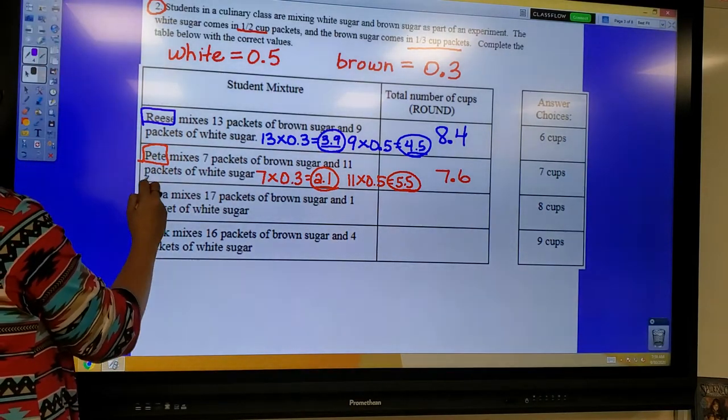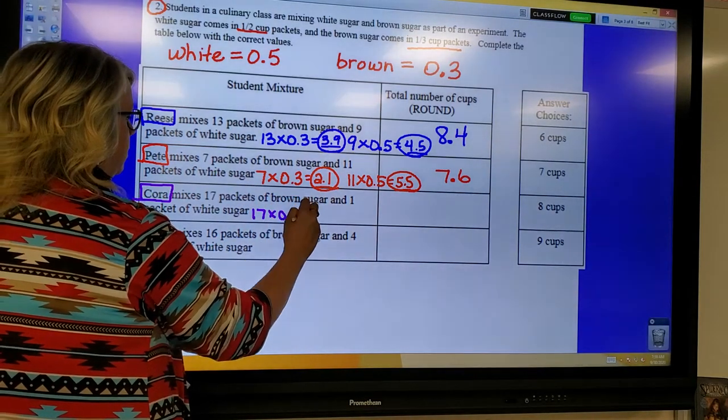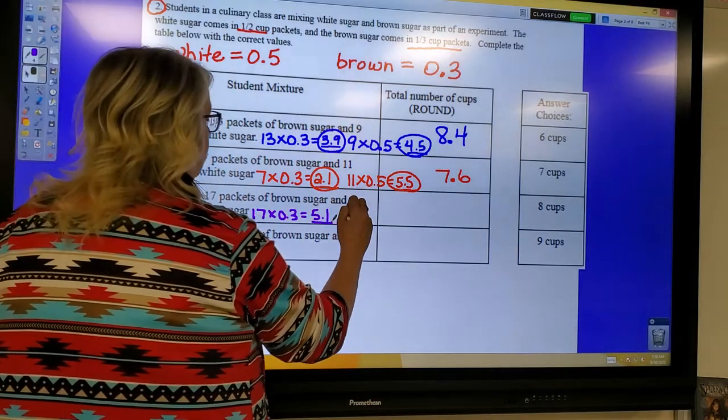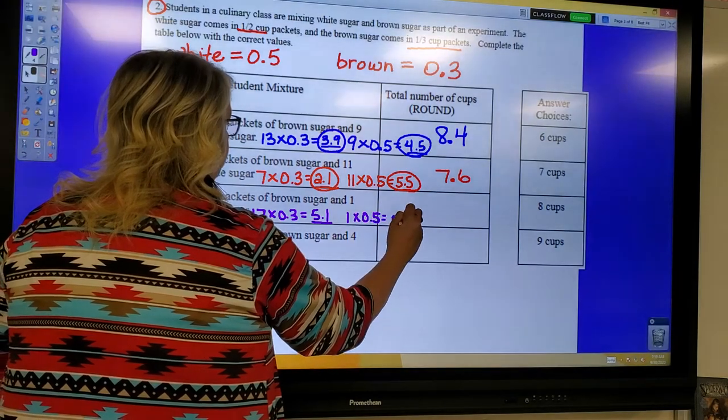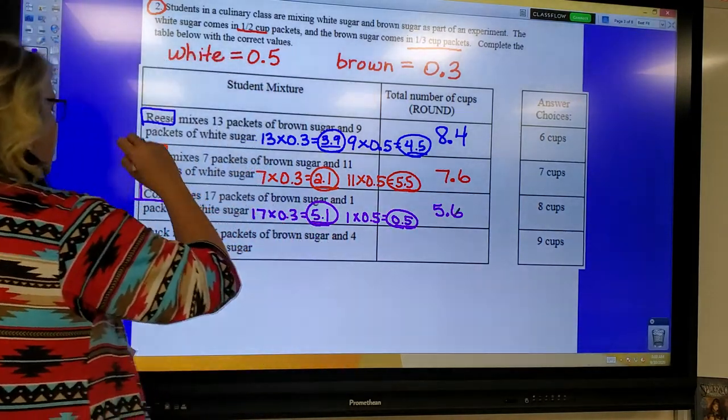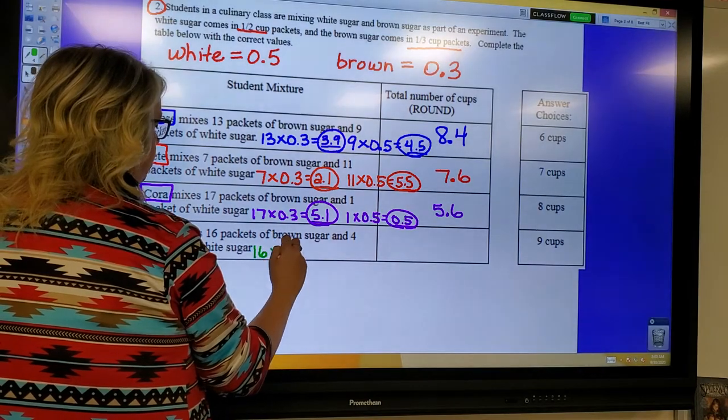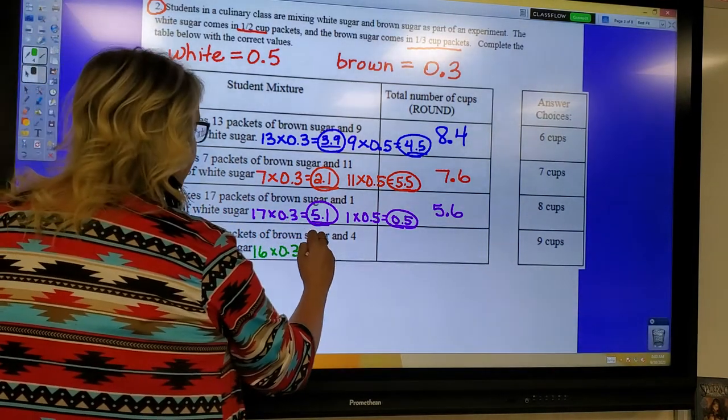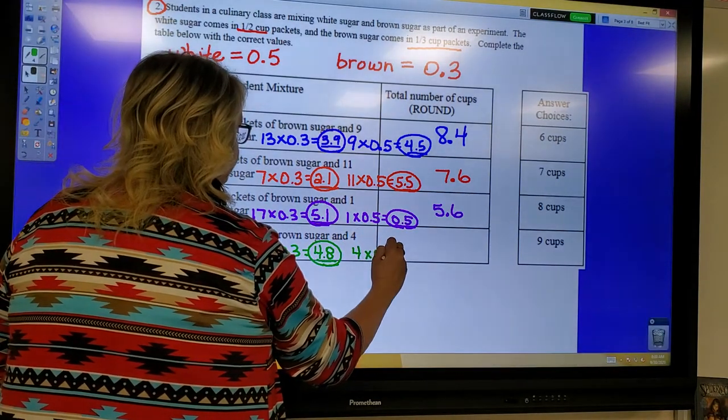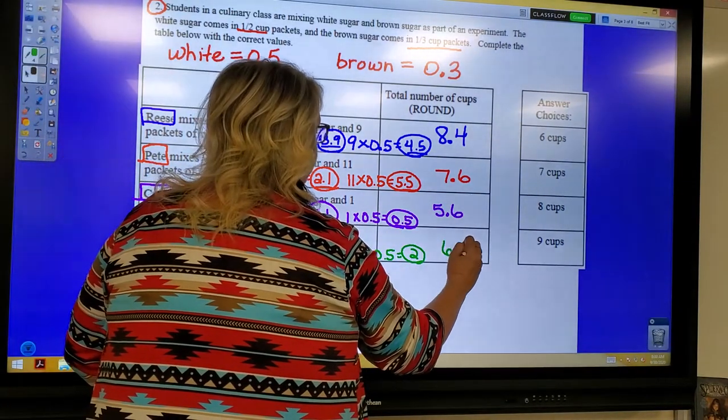Okay, let's move on to Cora. I'm going to do Cora in purple. Cora is going to use 17 packets of brown. So 17 brown is 0.3, and 17 times 0.3 is 5.1, and 1 packet of white. 1 times 0.5 is 0.5. So 5.1 plus 0.5 is 5.6. And lastly, Huck. We'll do Huck in green. Huck has 16 packets of brown. So 16 times 0.3 is 4.8. And 4 packets of white, 4 times white is 0.5, which would be 2. 4.8 plus 2 is 6.8.